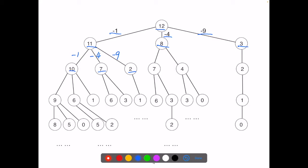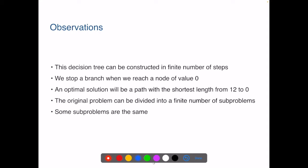So here are a few questions for you. First, does this tree grow infinitely? No. Second question. So when do we know to stop? Each branch of the decision tree ends when the remaining value is reduced to 0. Now third question. What is an optimal solution represented in this decision tree? So we know a candidate solution is represented by a path that travels from the root 12 to a leaf node 0. A path with the shortest length from the root to a leaf 0 will be an optimal solution.